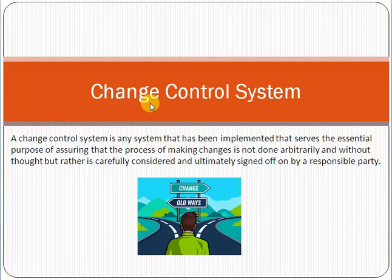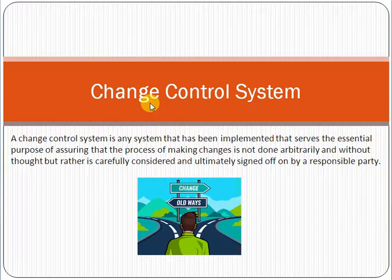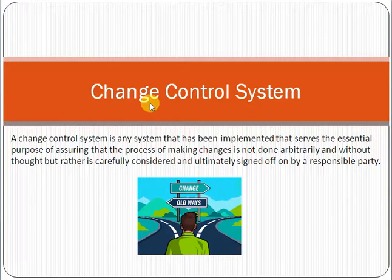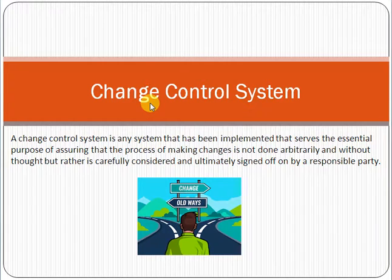Rather, changes are carefully considered and ultimately signed off on by a responsible party. For example, you have already implemented five modules at production and customers are already using them. Now one more module is approved. When you implement that change at production, you cannot simply just push it — there must be some mechanism, some procedure, to implement that change at production.